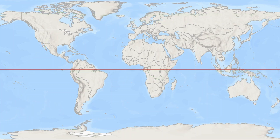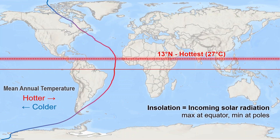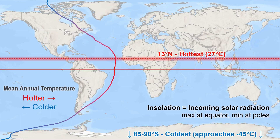For hottest and coldest latitudes, the main control is annual insolation, which is greatest at the equator and lowest at the poles. The hottest parallel is 13 degrees north of the equator, owing to the greater land cover of the northern hemisphere and because land surfaces absorb more of that insolation energy than water. High Antarctic parallels are the coldest, significantly colder than the Arctic due to less ocean moderation and because of additional cooling with elevation and greater perpetual snow and ice cover.